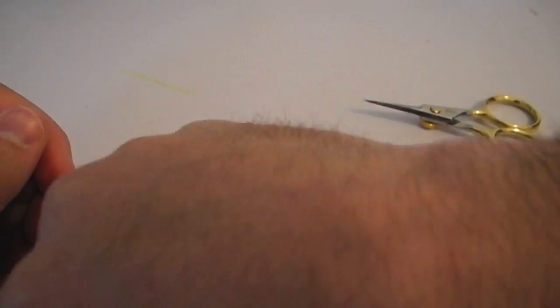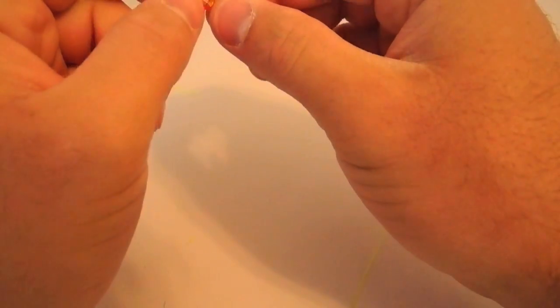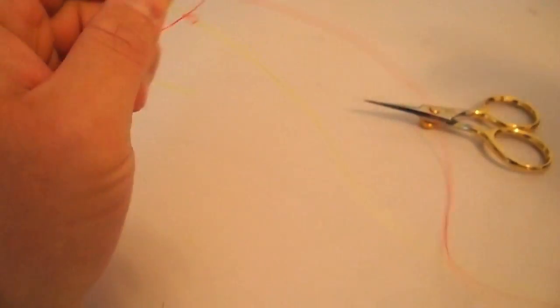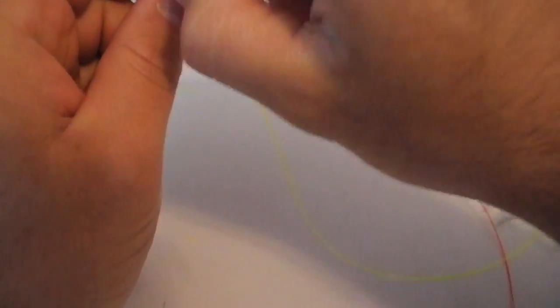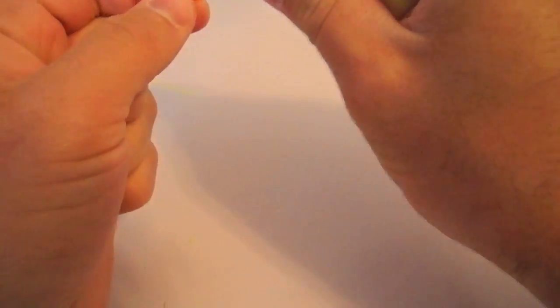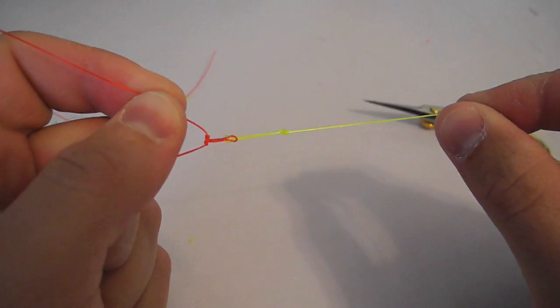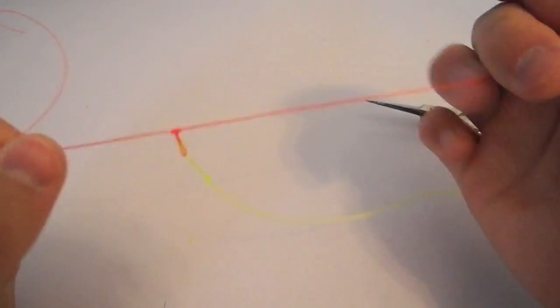Then what you can actually do is do a loop-to-loop connection here, that way you can change out your droppers as much as you want.